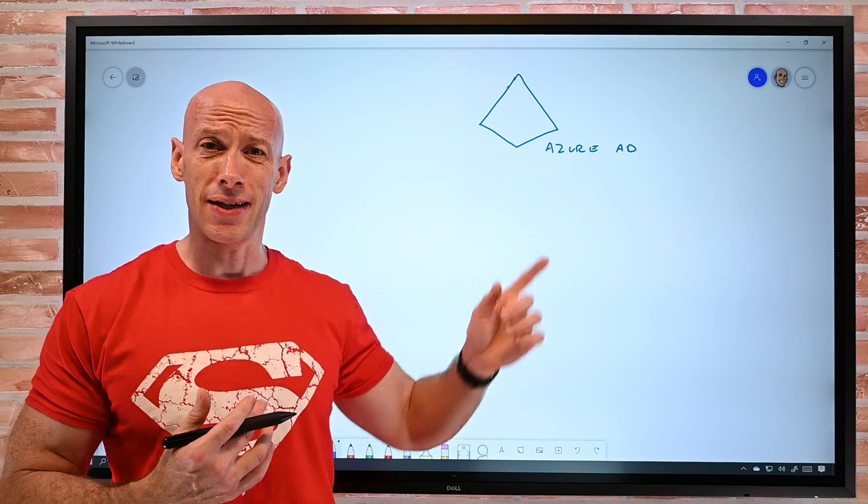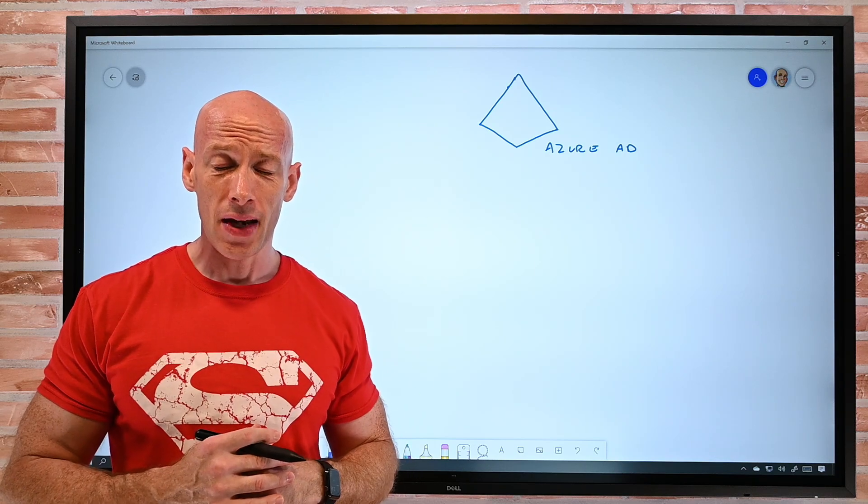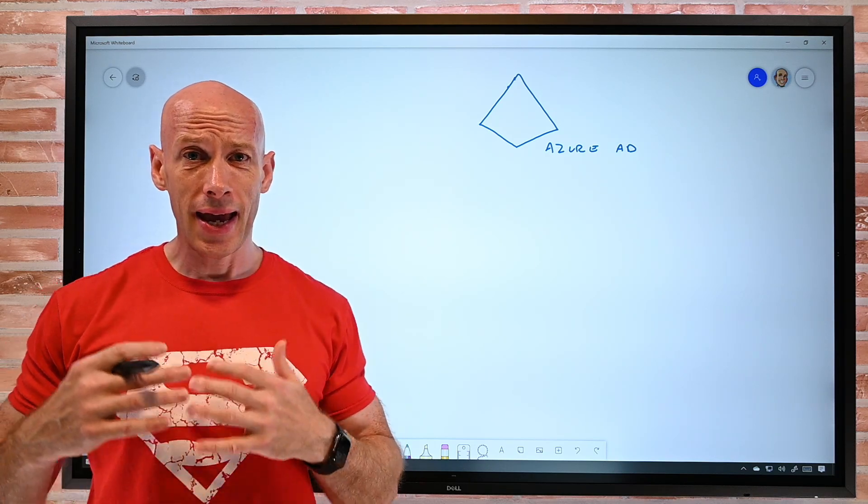And you can say I'm cheating because I've got Azure AD drawn on there already. So I'll start the stopwatch and see if we can do that.